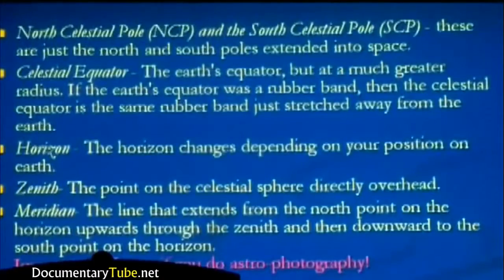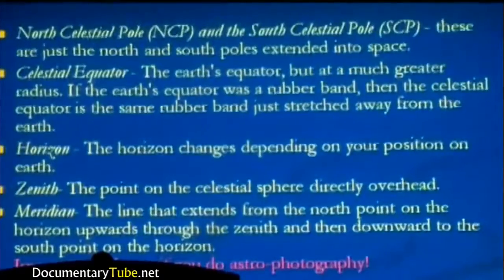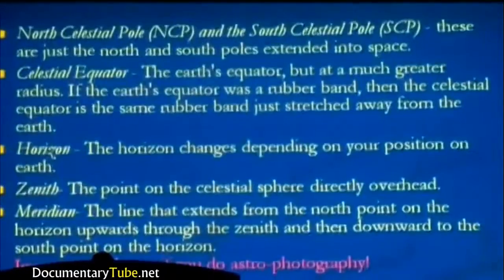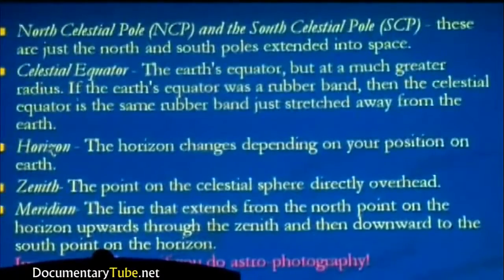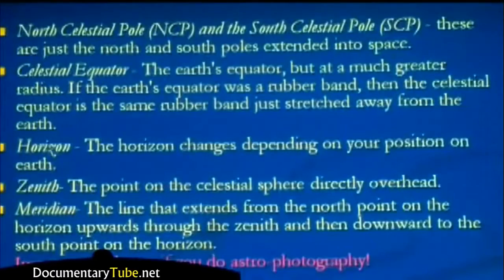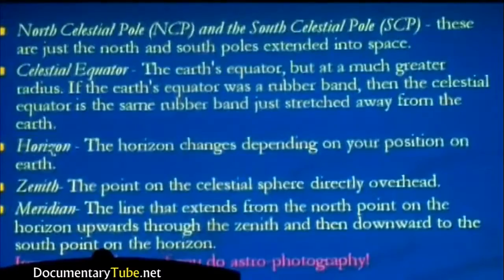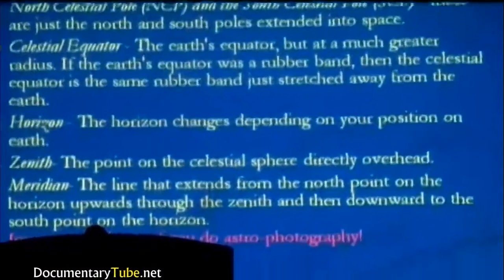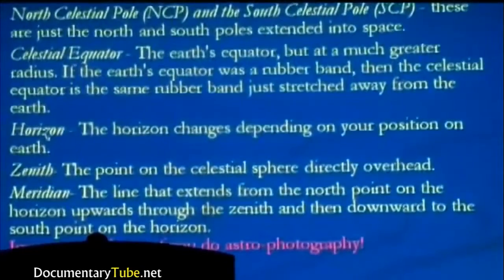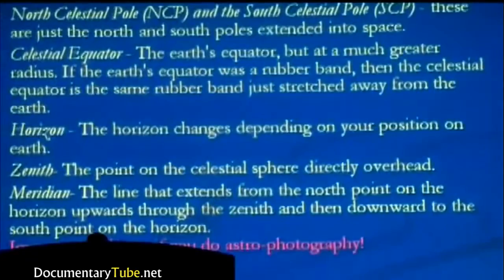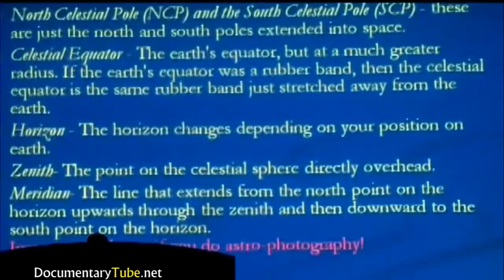From Dallas, Texas, you can't see the South Celestial Pole because the Earth blocks your view. Conversely, people in the southern hemisphere can't see Polaris because their horizon is different. The horizon is critical for which objects you can see and the time of night and year you're observing. Zenith is the point directly overhead on the celestial sphere — 90 degrees above the horizon. The meridian is the line extending from the north point on the horizon up through the zenith and down to the south point.